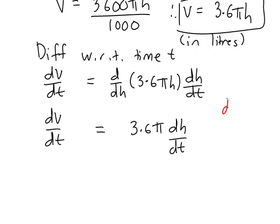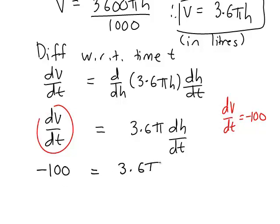So we'll just write that down as a bit of a note here to help us out. dV/dt is negative 100 and it's now going to be a matter of subbing that into our formula. So that's going to become negative 100 is equal to 3.6 π times dh/dt.